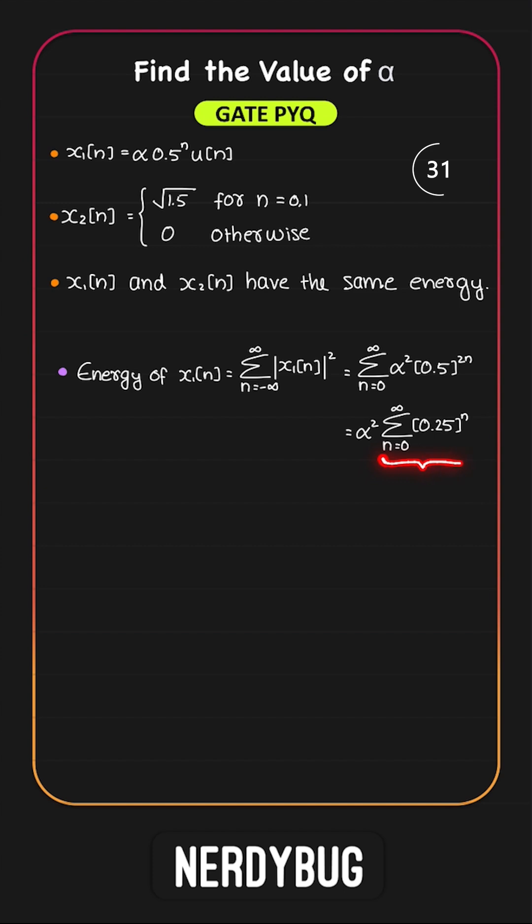It is an infinite GP and the common ratio is less than 1. It converges to 1 by 1 minus 1 by 4 which makes the energy 4 by 3 alpha square.